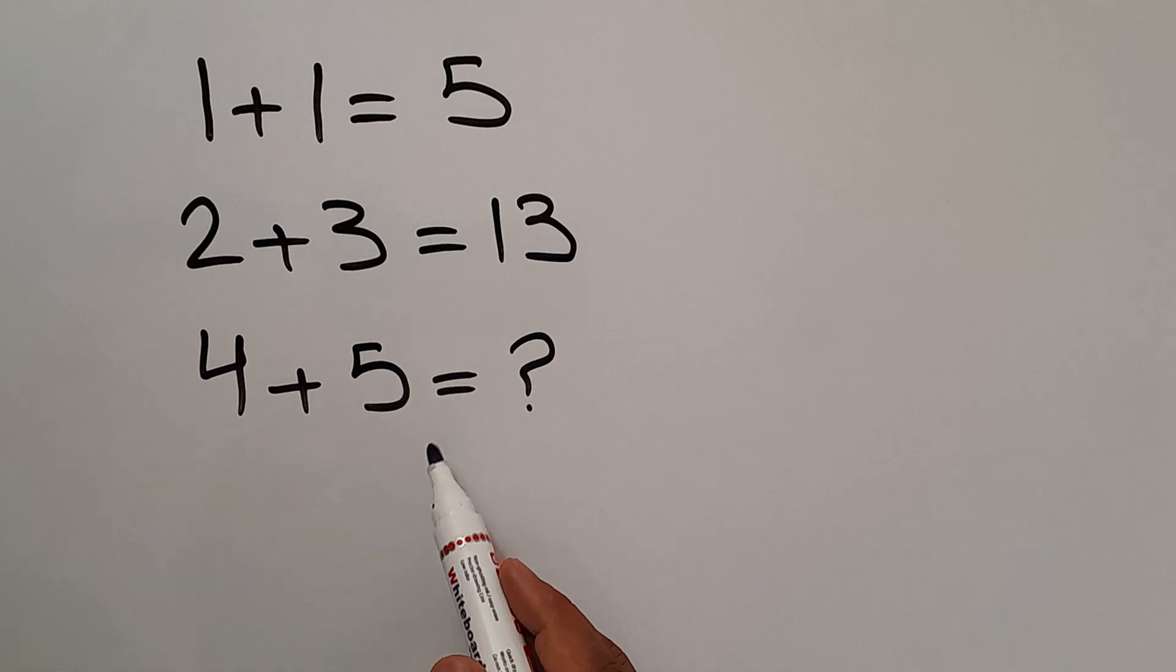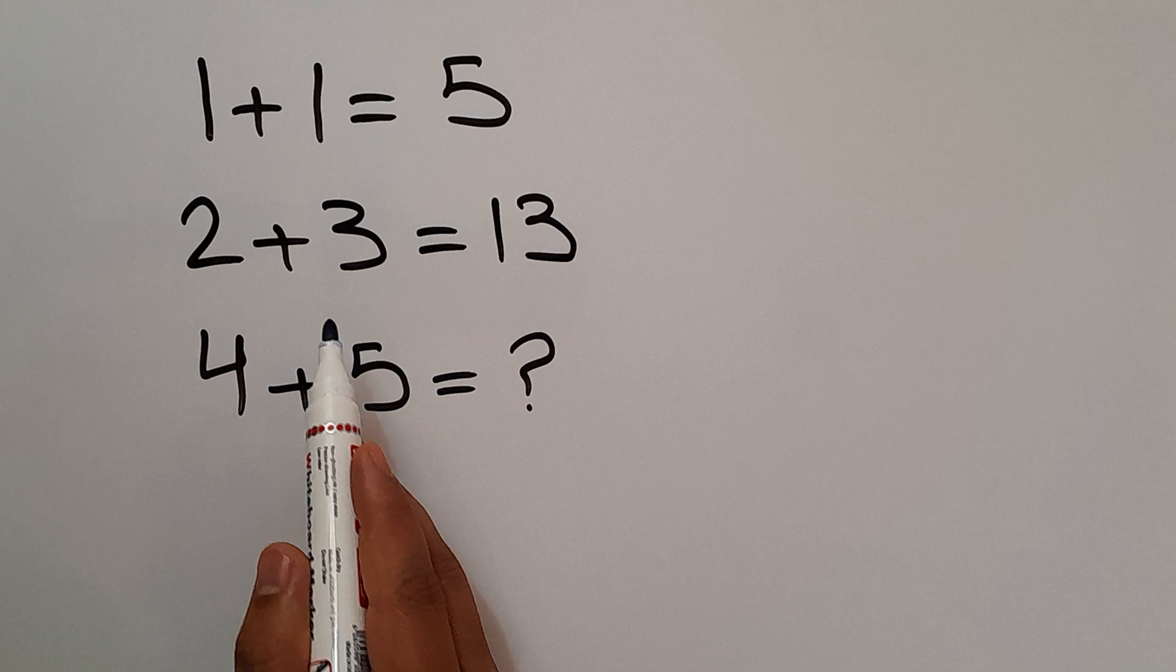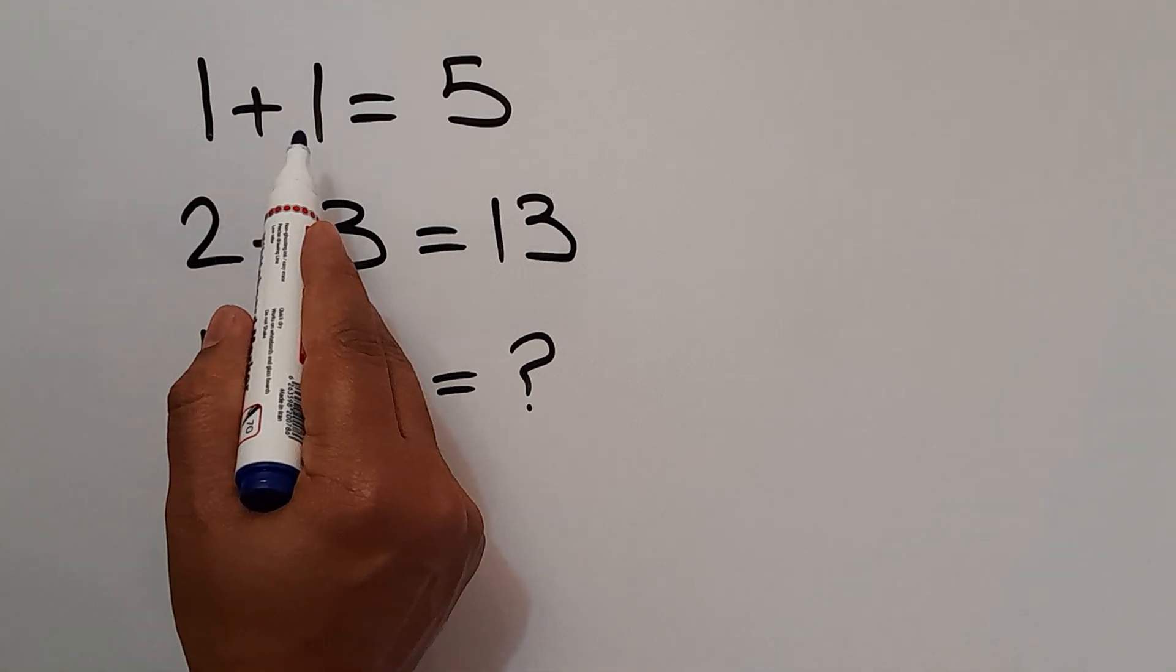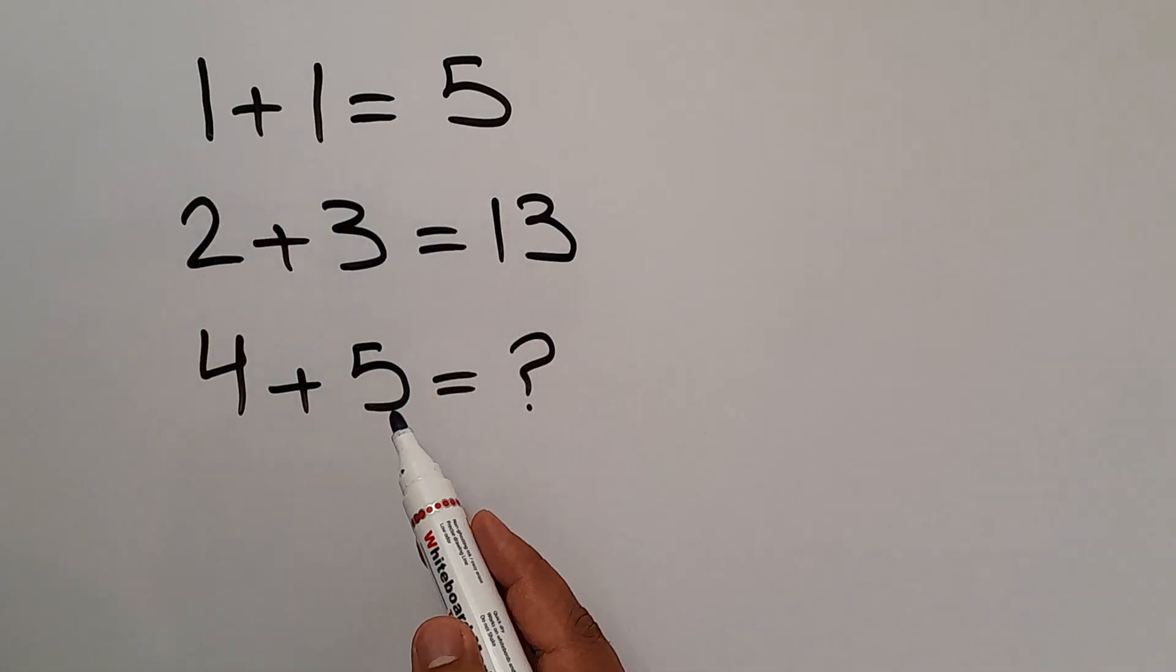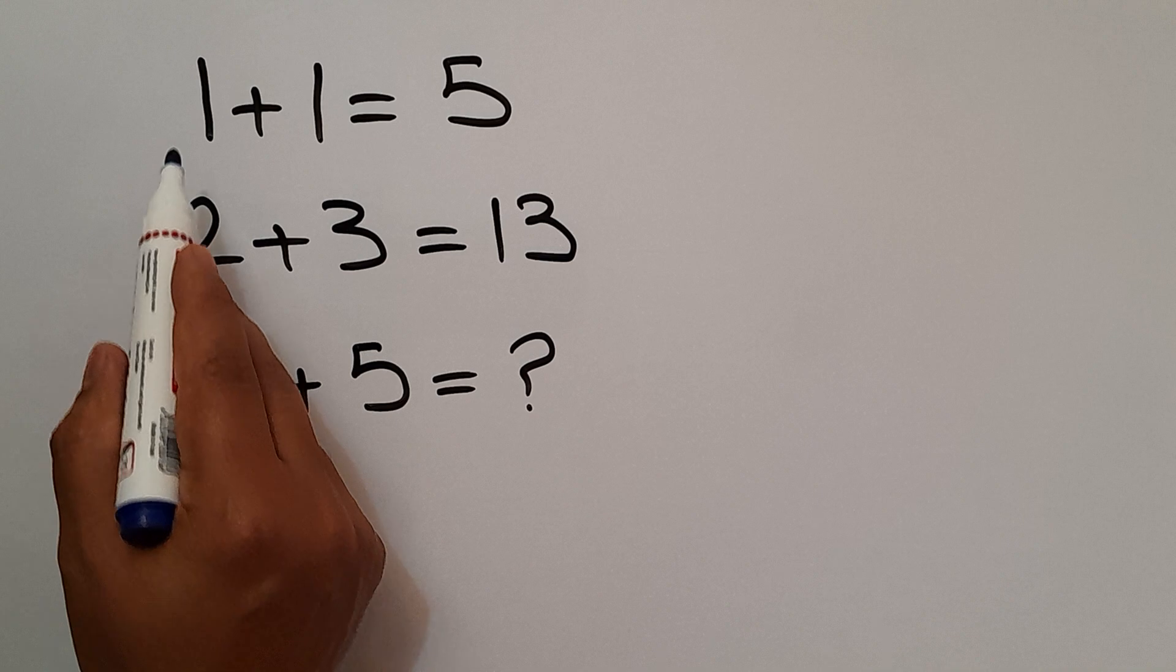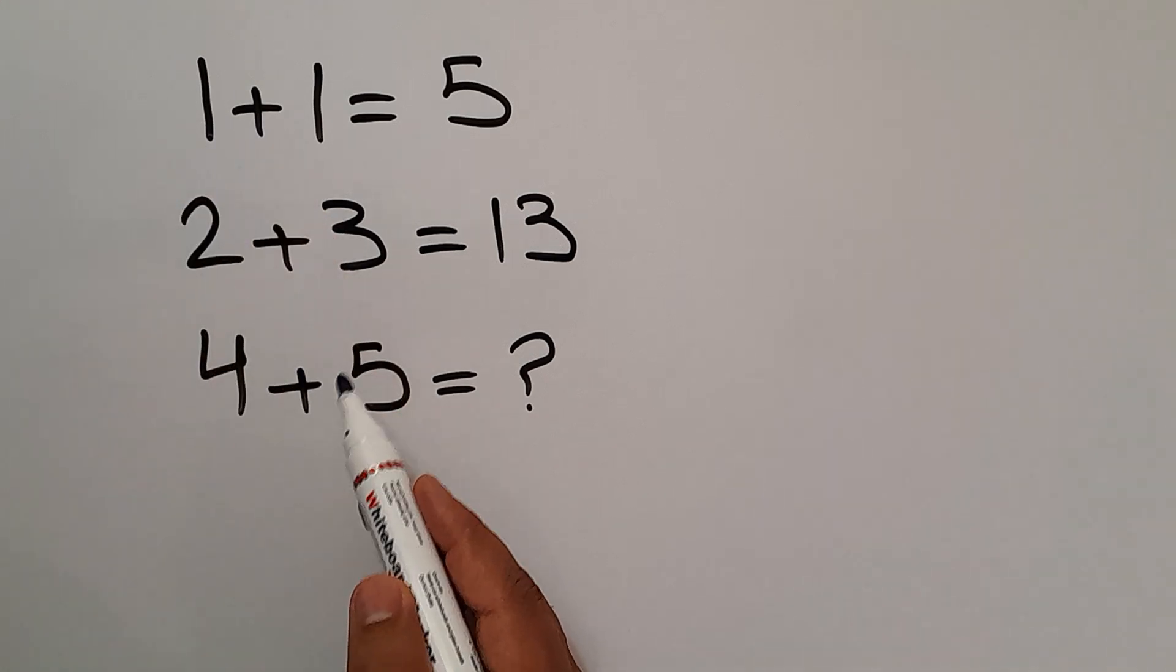Are you ready to solve? Let's go. To start, in the first equation we have three numbers: 1, 1, and the 5. We need to find the relationship between the left hand side numbers and the right hand side number.